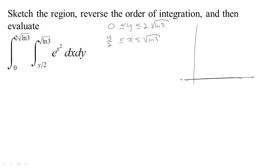So there's the line y equals zero and the line y equals two square root of ln three, it must be up here somewhere, two times the square root of ln three.